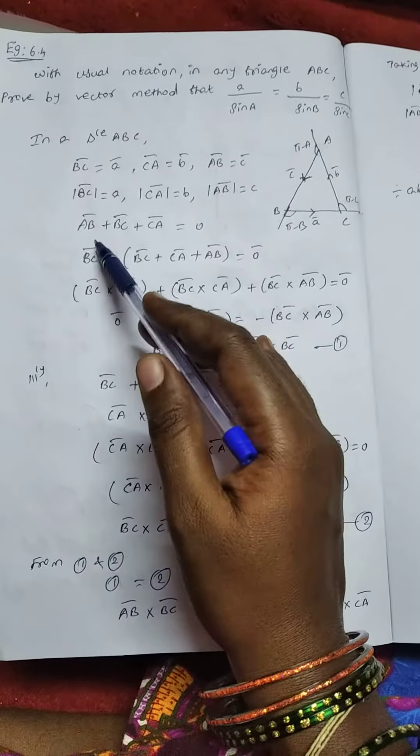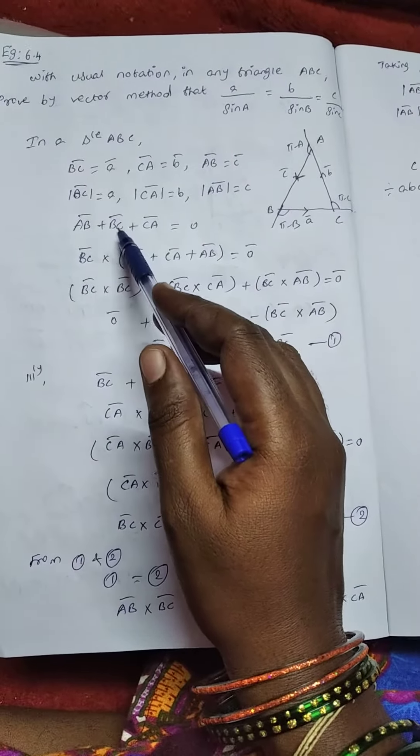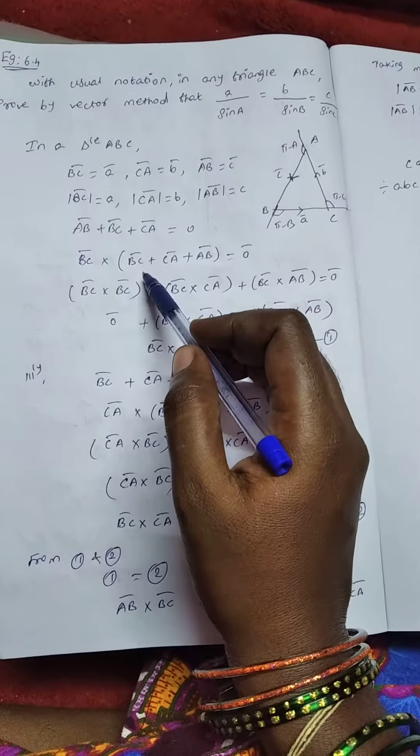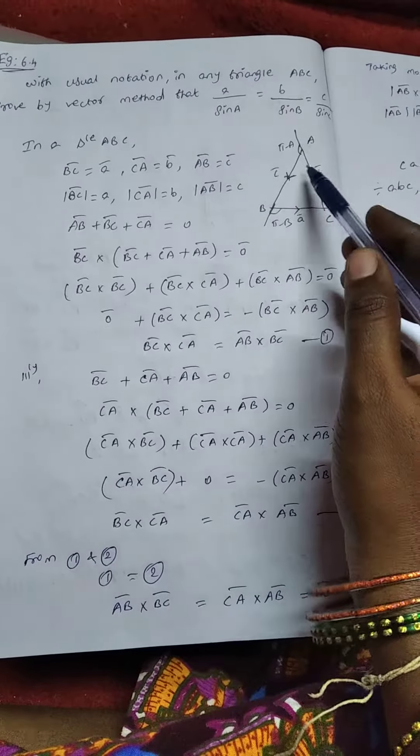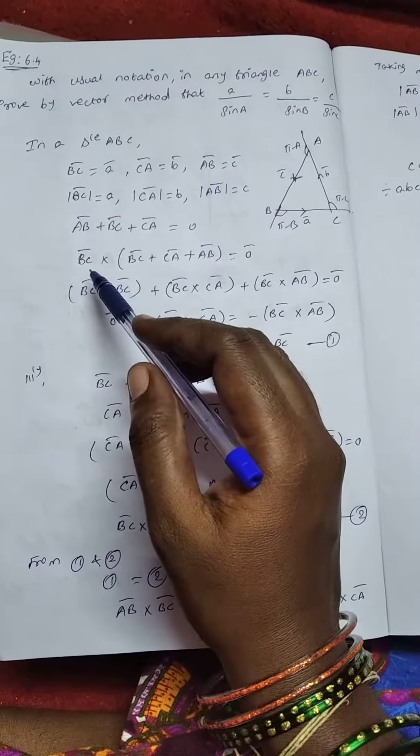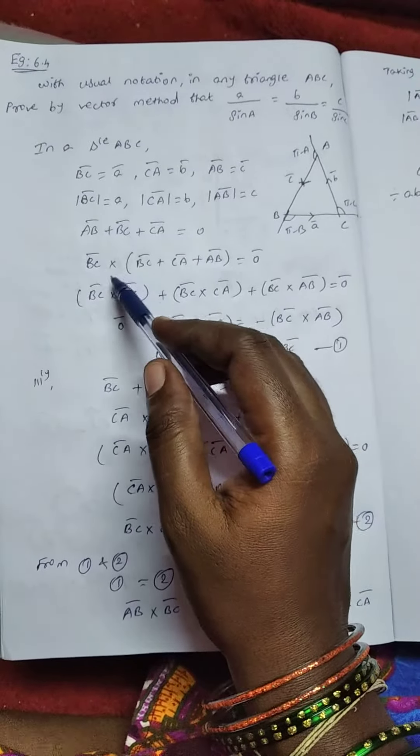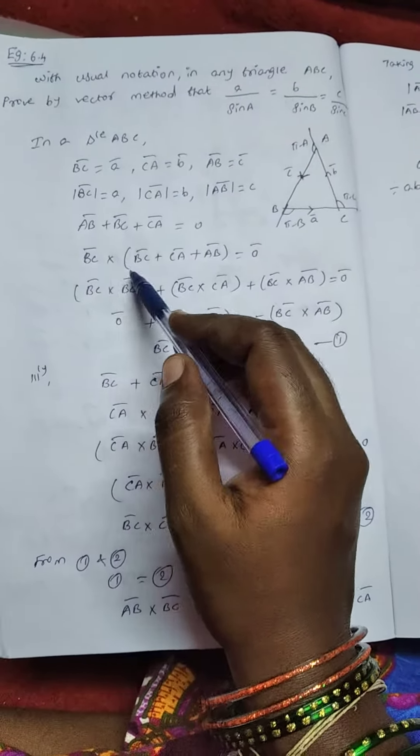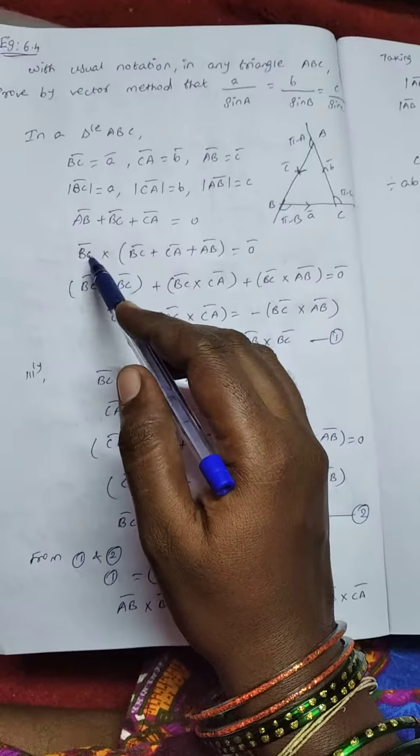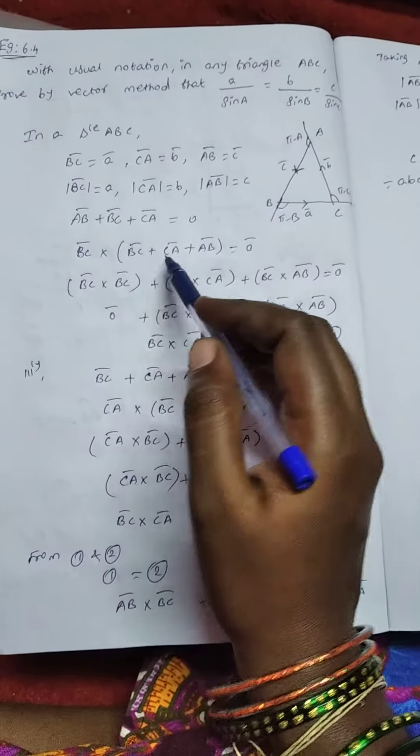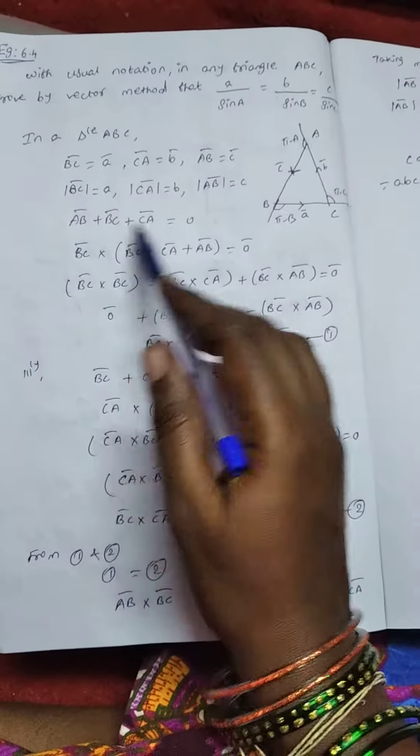Now we can multiply. First BC, CA, AB. First we multiply BC vector, cross multiply it. BC cross this value. BC cross BC plus BC cross CA plus BC cross AB.